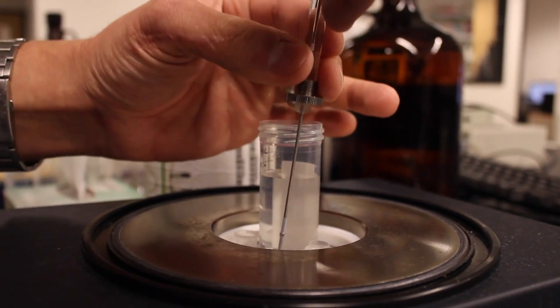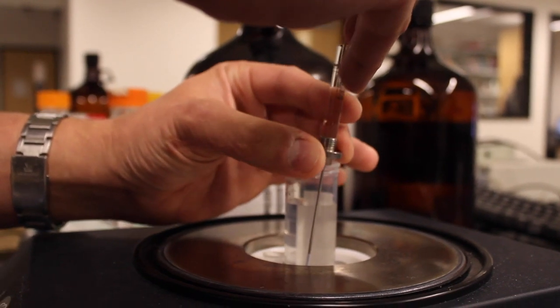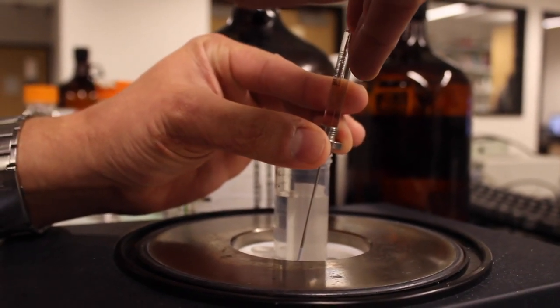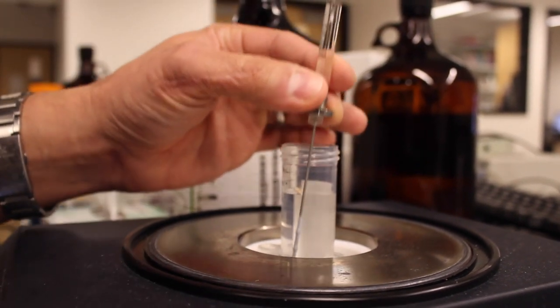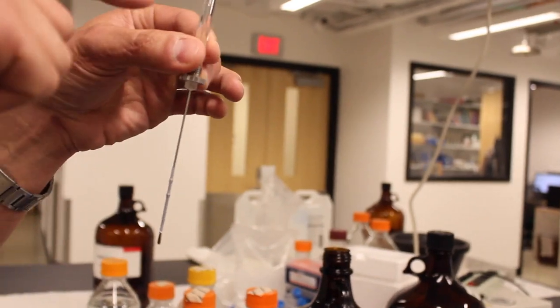and push the plunger down until liquid starts coming out of the bottom of the syringe and then we can put the syringe back into the solution and draw it up typically to the 50 microliter mark on the top here and now the syringe is completely full from top to bottom.